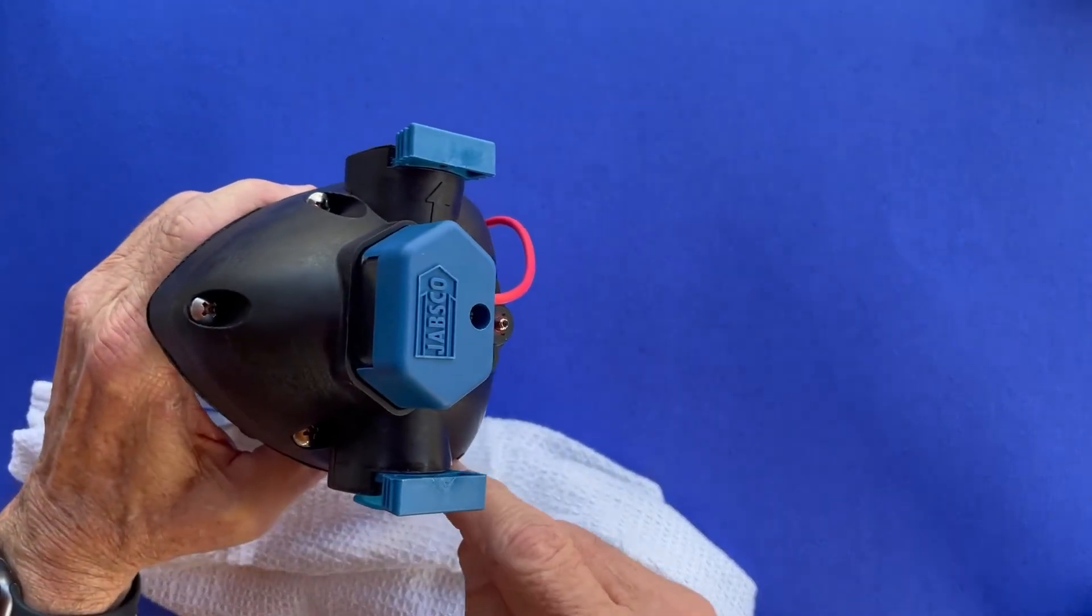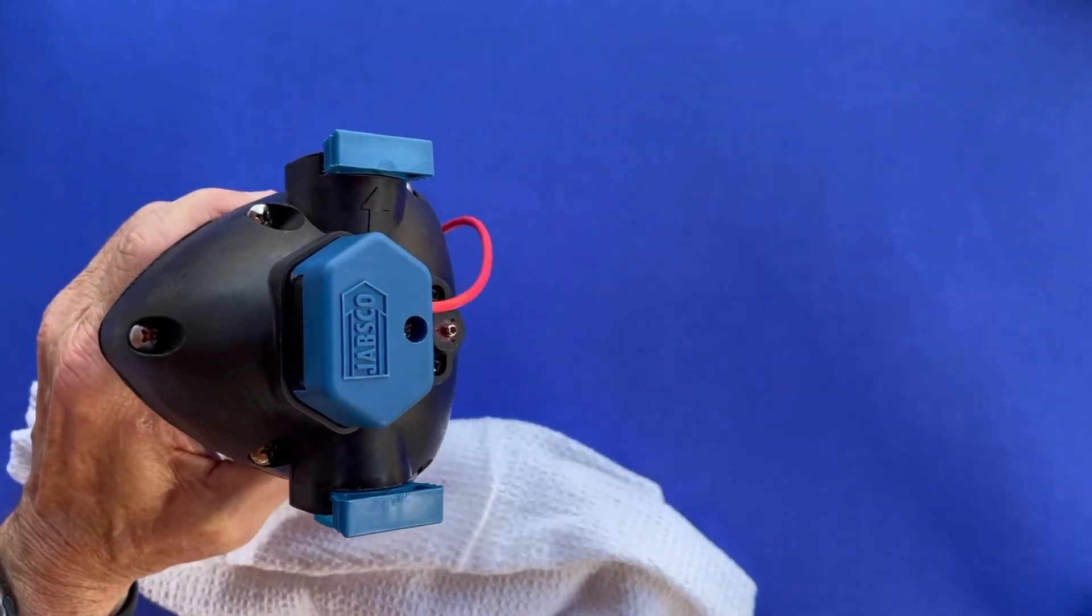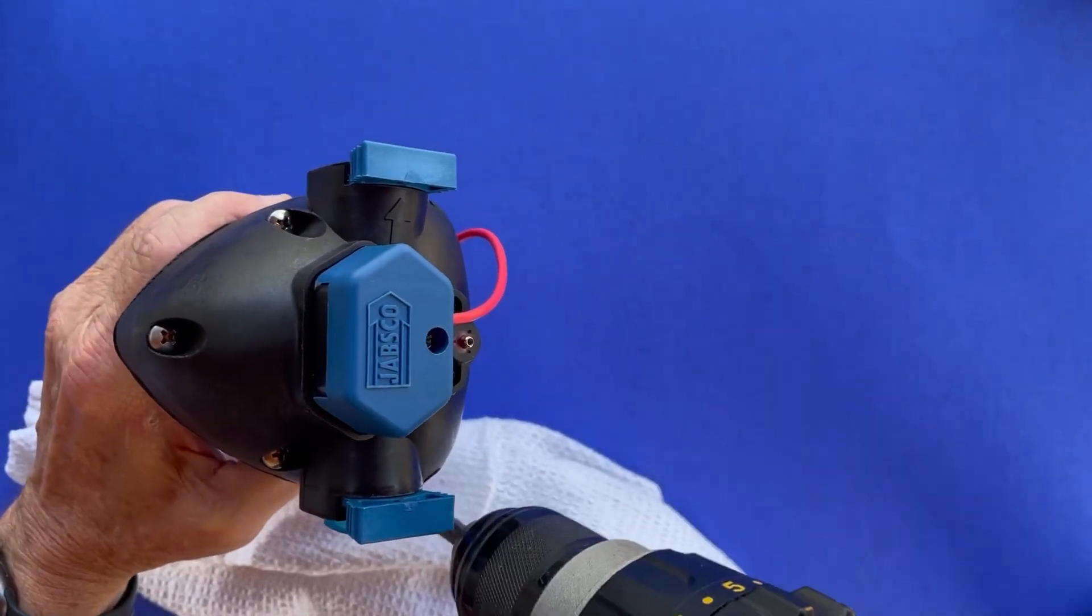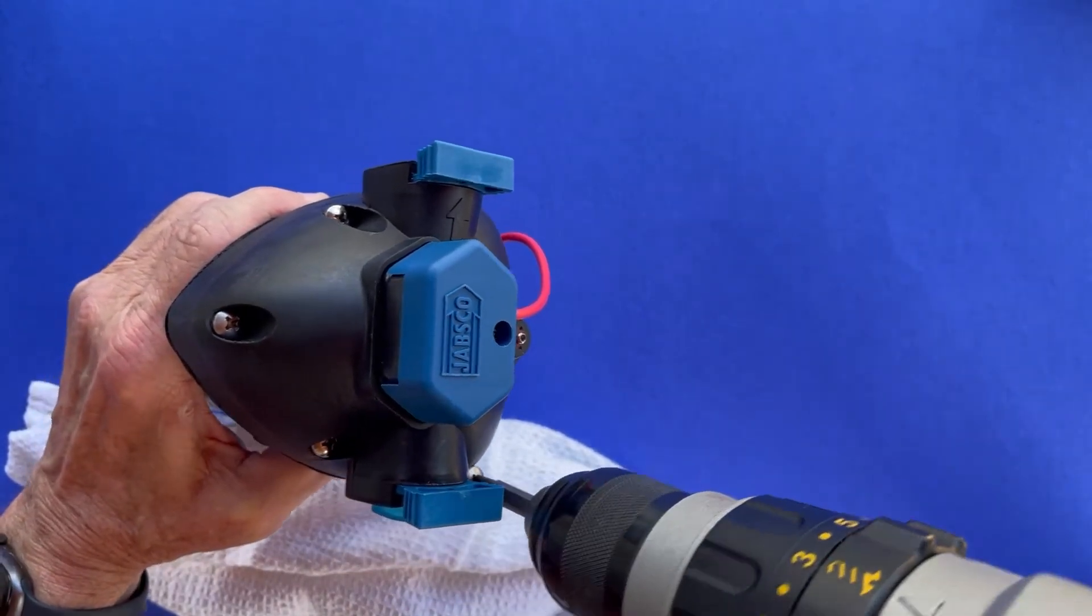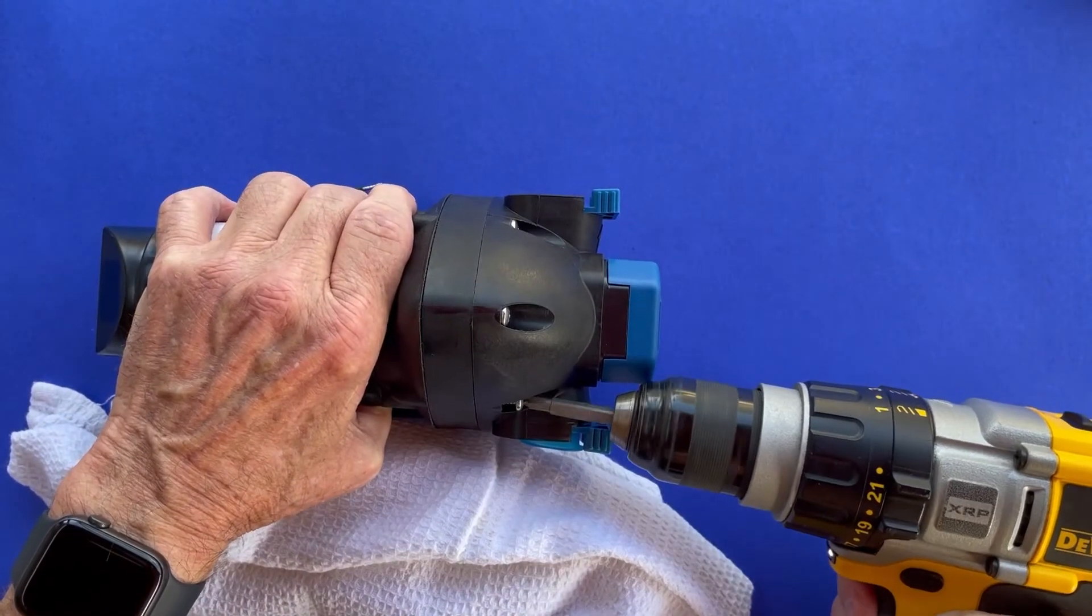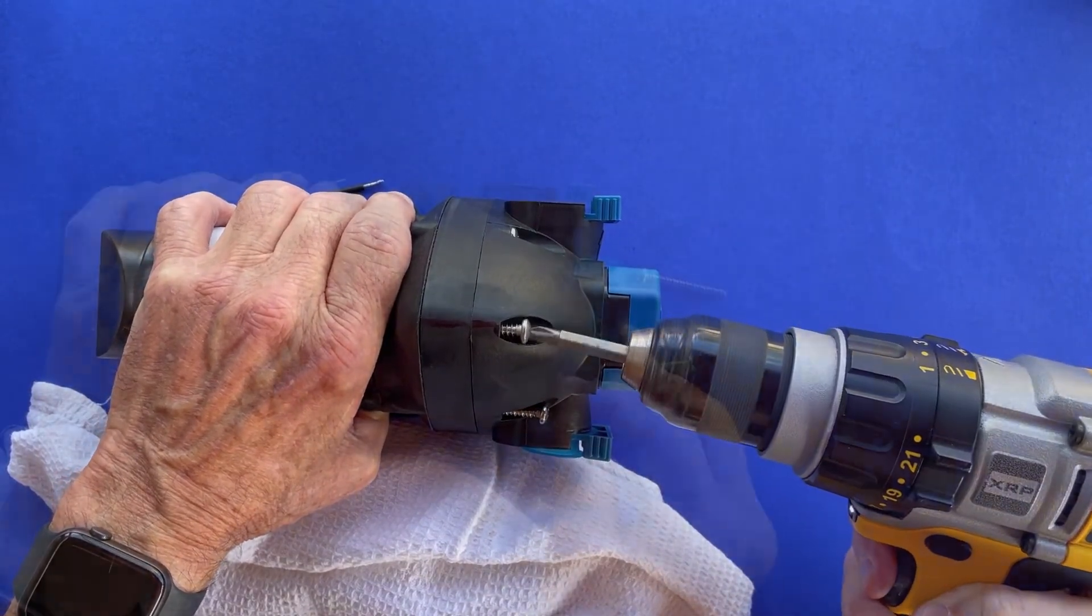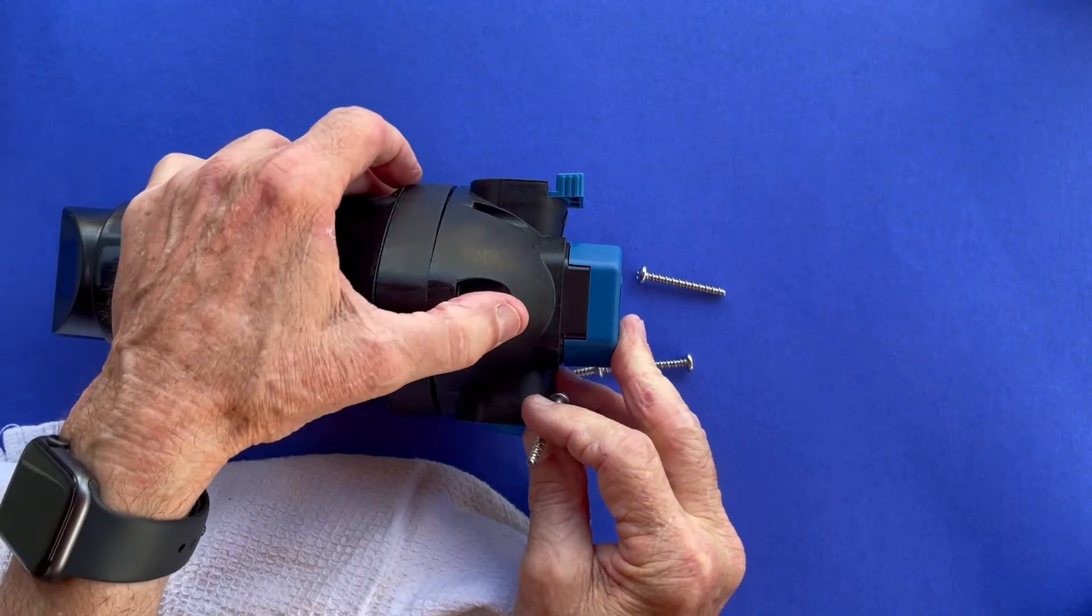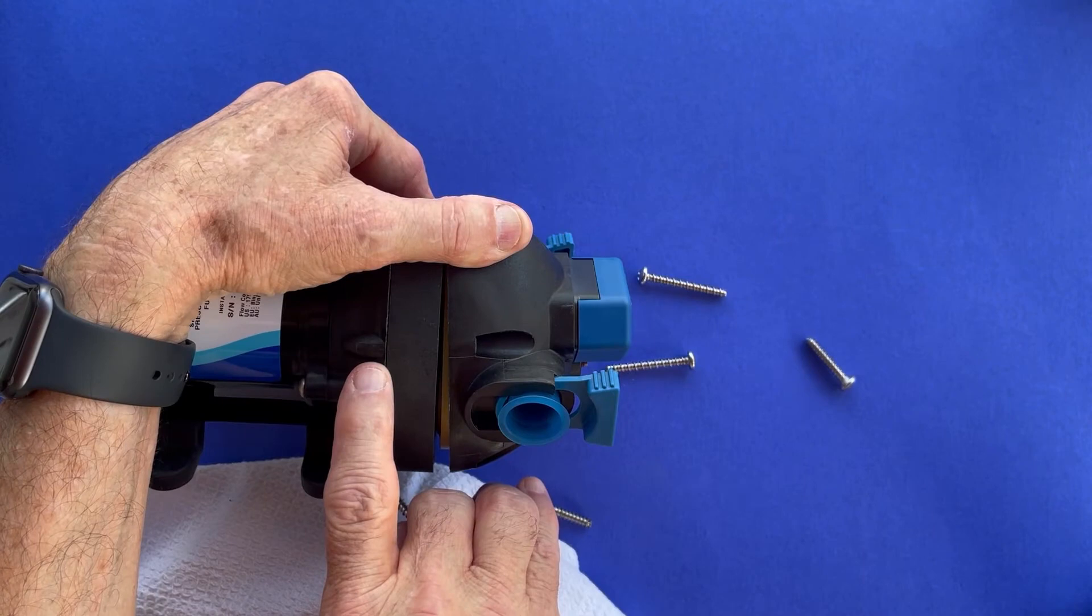Unscrew the six screws in the pump's upper housing using a Phillips head. Be sure to have a towel handy for any water that leaks out. Notice the three longer screws in their location. There is a plastic post on the housing for the longer screws.